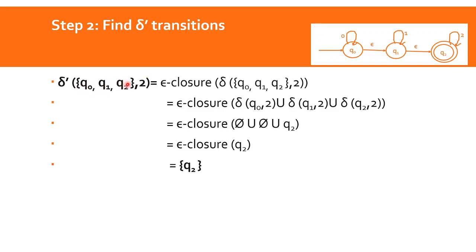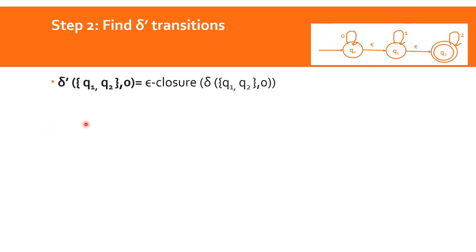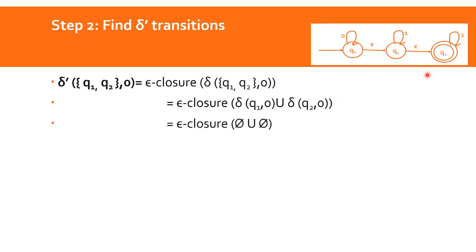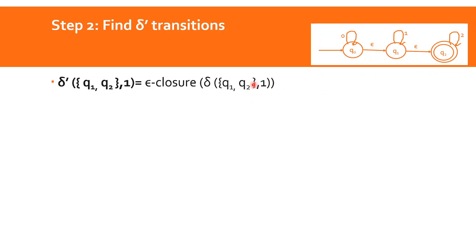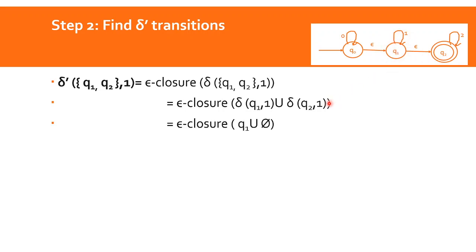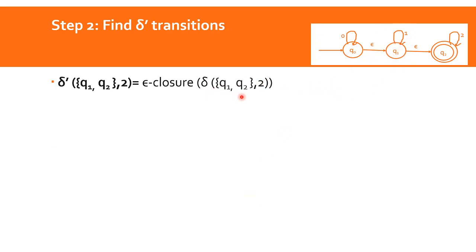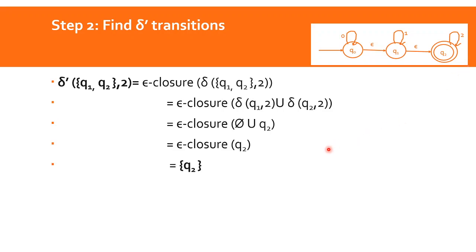For state {Q0, Q1, Q2}, we have three transitions on inputs 0, 1, 2. Now for state {Q1, Q2}: delta-dash of {Q1, Q2} on 1 — delta(Q1,1) and delta(Q2,1) — takes epsilon closure of {Q2} union {Q2}, which gives epsilon closure of Q2 = {Q2}. So transitions give us states {Q0,Q1,Q2}, {Q1,Q2}, and {Q2} as our three resulting states in the table.